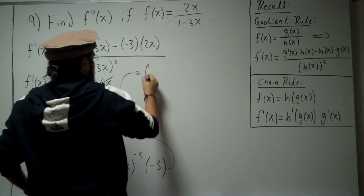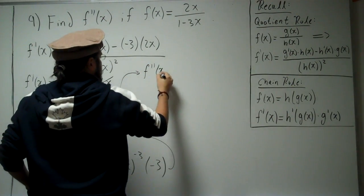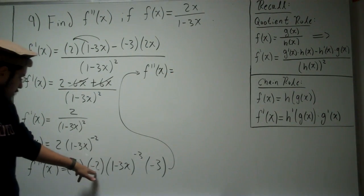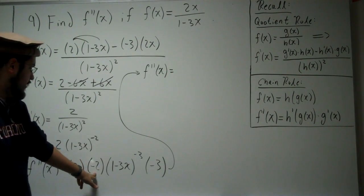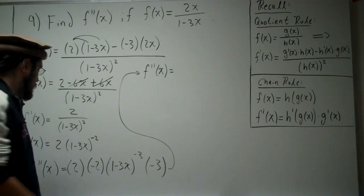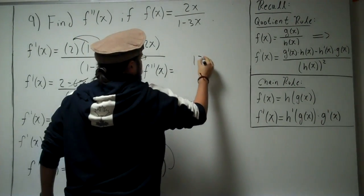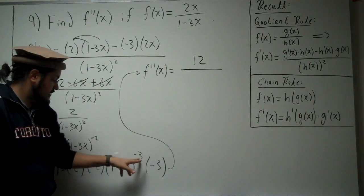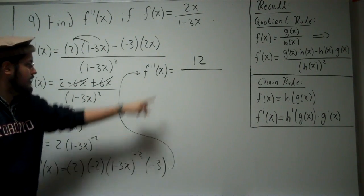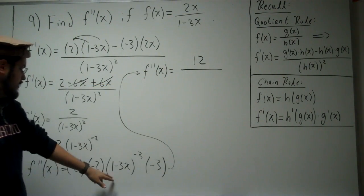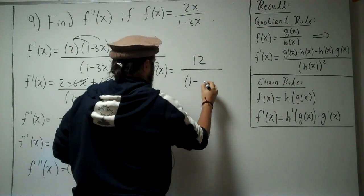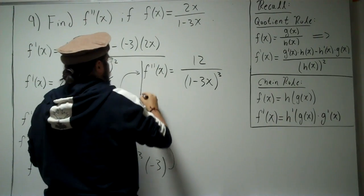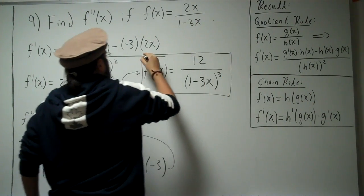Simplifying: f double prime of x equals 2 times negative 2 times negative 3, which is positive 12, divided by (1 minus 3x) cubed. That is your final answer — that is the second derivative.